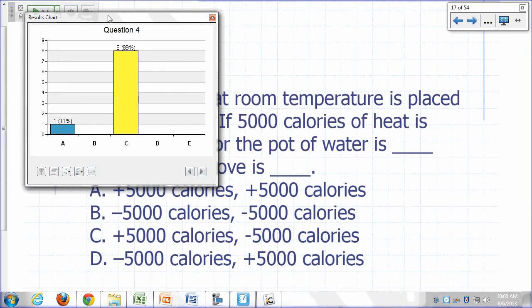For the pot of water, did heat energy go into the pot of water? Yeah. Temperature increases, so energy flows into the water, so positive Q for the water and negative Q for the stove.